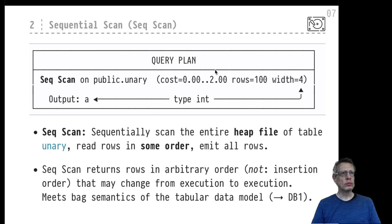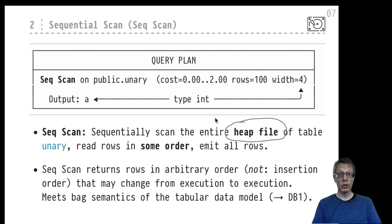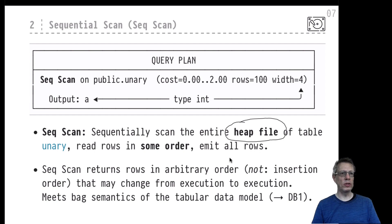What does the sequential scan actually do? It visits the entire table contents. PostgreSQL holds table contents in a so-called heap file — this is where all the rows (the 100 rows of table unary) reside. The sequential scan scans all the contents of the heap file in some arbitrary order, which fits the relational data model because there is no defined row order on tables. The sequential scan is free to visit the heap file in any way it sees fit — front to back or back to front — and reproduce all rows in some particular order. Importantly, this is not the insertion order.